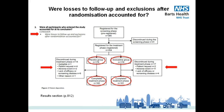It is important that these participants are still accounted for in the results analysis, not only to avoid attrition bias, but also to give a true reflection of the effect of the treatment being studied. For example, if some participants withdrew from the study because of serious adverse effects and they're not accounted for, the treatment might appear more effective than it really is.